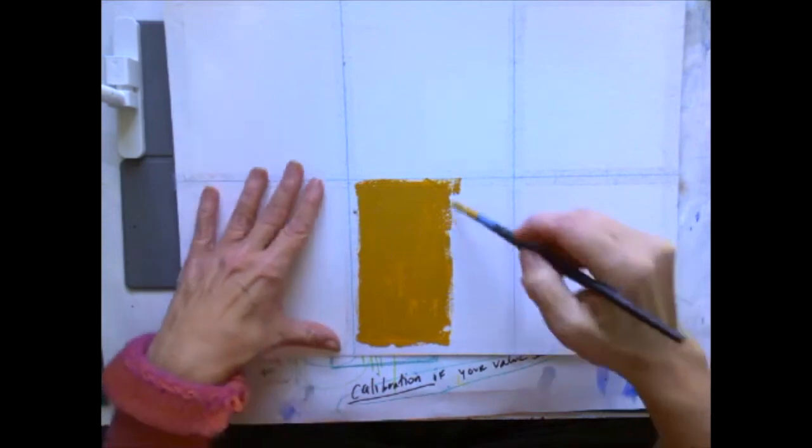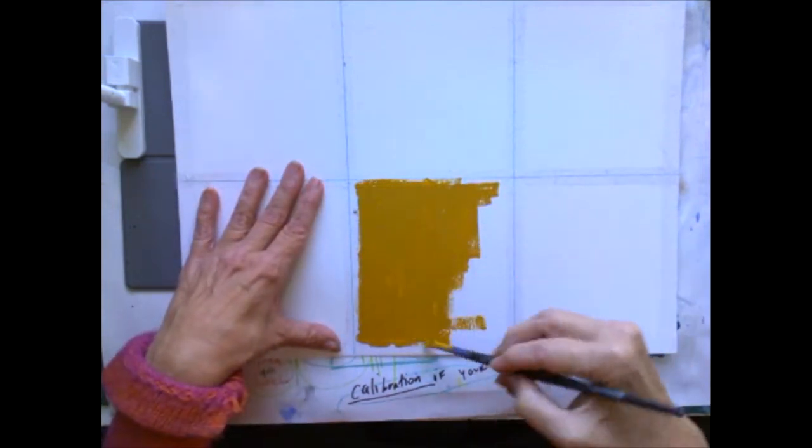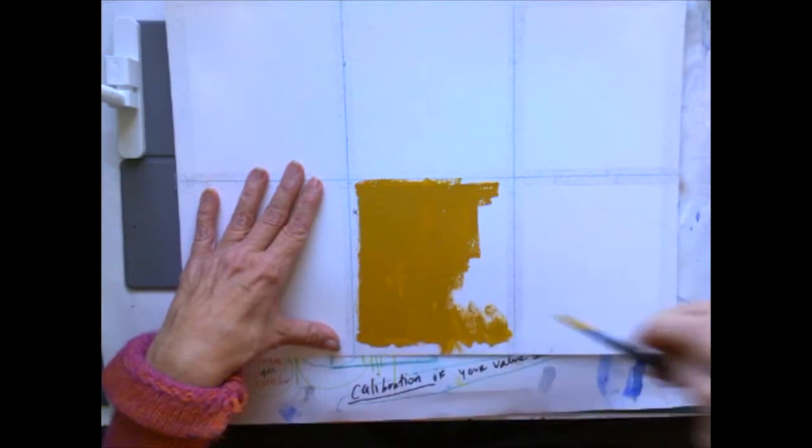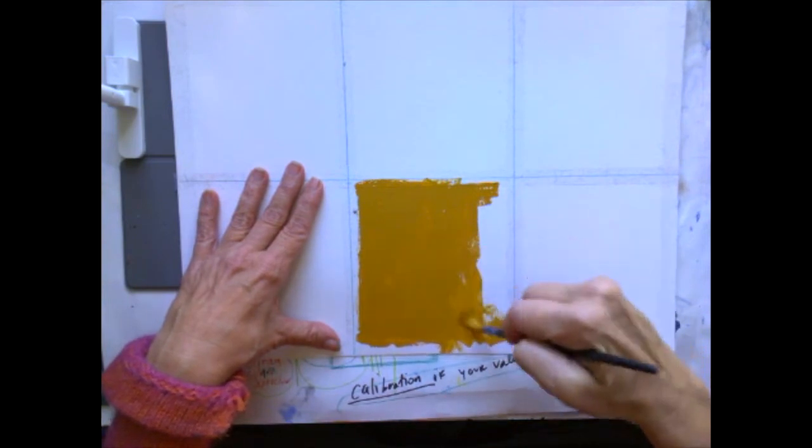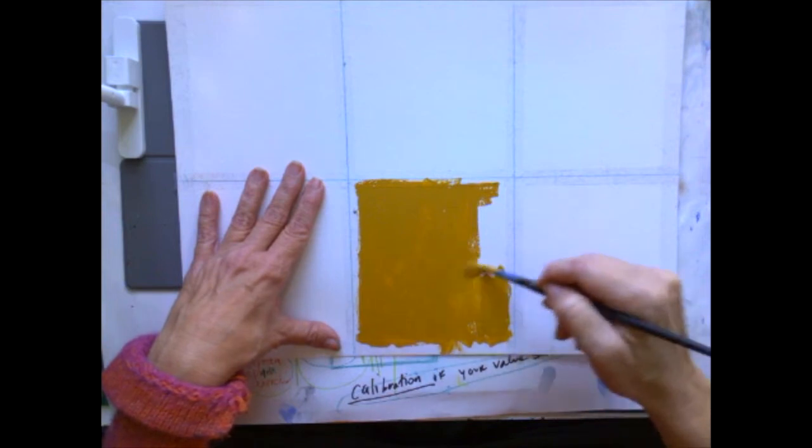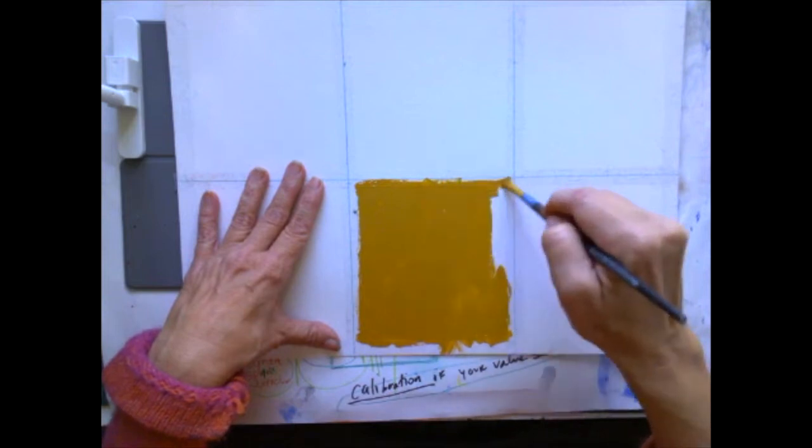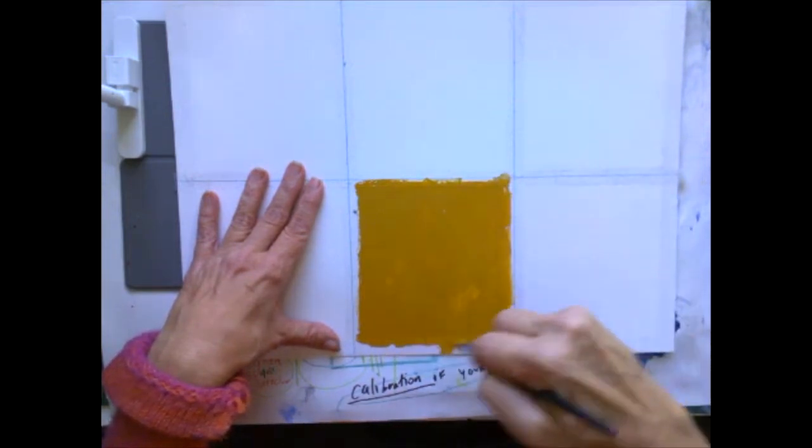And we probably will talk about this in class, but the yellow earth name, most likely this pigment is an iron oxide or a Mars color. And we'll see what it's actually made of.